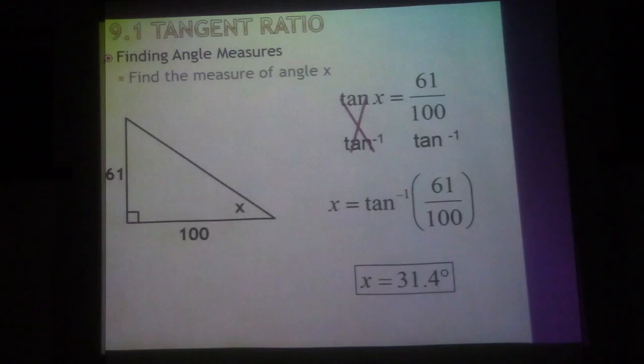So for today, we go over the tangent ratio, which is tangent equals opposite over adjacent. The biggest thing is to get rid of the tangent. If we're trying to solve for an angle, we'd use tangent inverse.